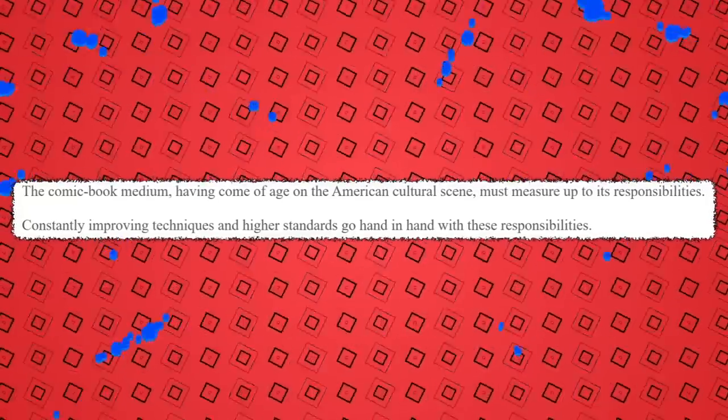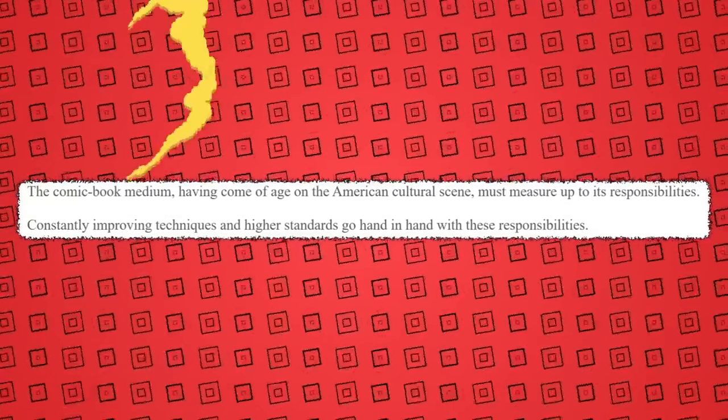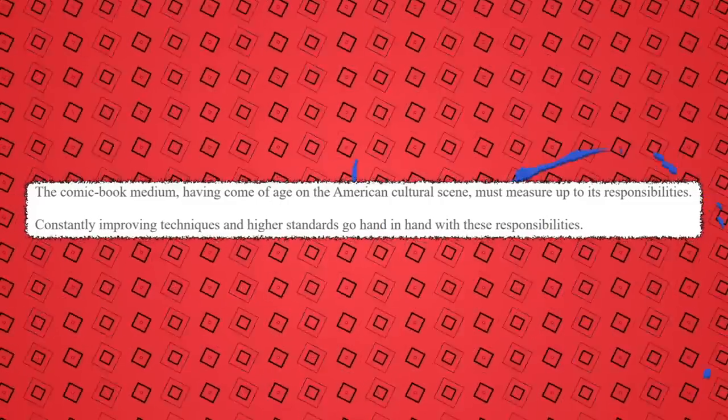This type of censorship was not unique to comics — in fact, in a way it spoke to the popularity and rise comics were having on the American cultural scene. Film had been censored this aggressively decades earlier with the Hays Code, which was equally if not more intense in some regards — hence all those movies where the husband and wife have separate beds. I want to read the opening paragraph of the code: 'The comic book medium, having come of age on the American cultural scene, must measure up to its responsibilities. Constantly improving techniques and higher standards go hand in hand with these responsibilities.' With great power comes great responsibility to censor yourself aggressively.